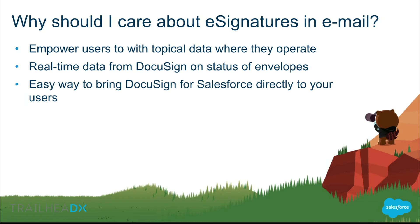So why should we care about e-signatures for email? It's a really good way for us to empower our users. We have all this data displayed that we can take action on, and of course it's real-time data — as soon as someone signs or opens a document, the status will change. And it's an easy way to bring DocuSign for Salesforce functionality outside of Salesforce.